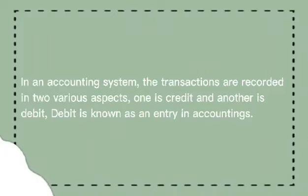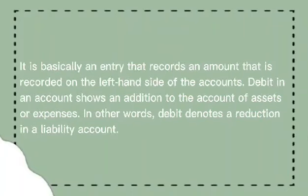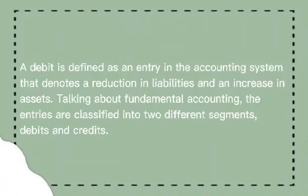In an accounting system, the transactions are recorded in two various aspects: one is credit and another is debit. Debit is known as an entry in accounting. It is basically an entry that records an amount on the left-hand side of the accounts. Debit in an account shows an addition to the account of assets or expenses. In other words, debit denotes a reduction in a liability account. Debit is defined as an entry in the accounting system that denotes a reduction in liabilities and an increase in assets.